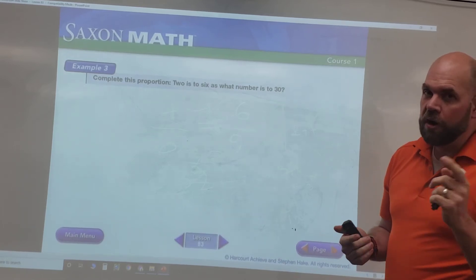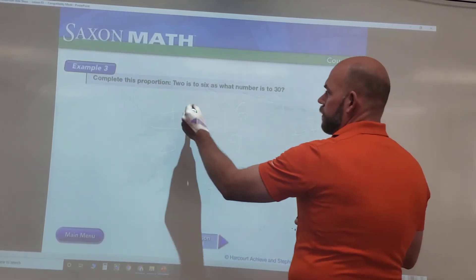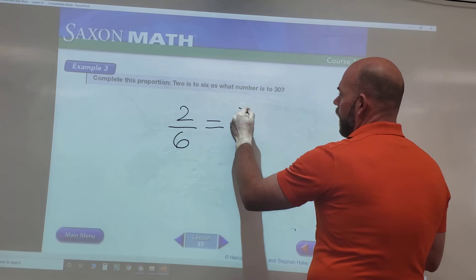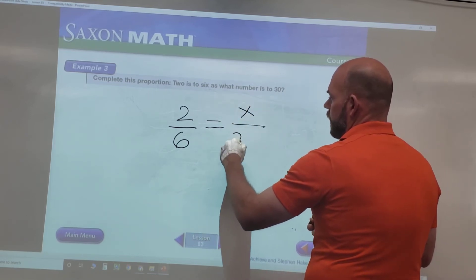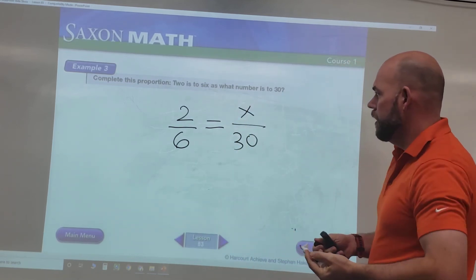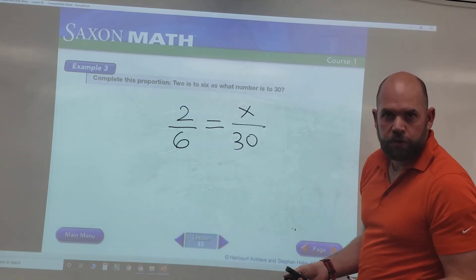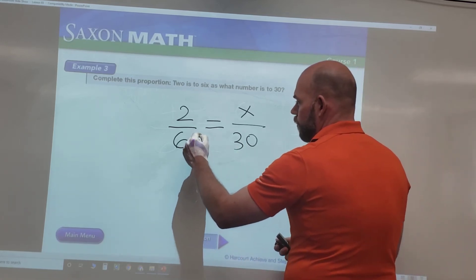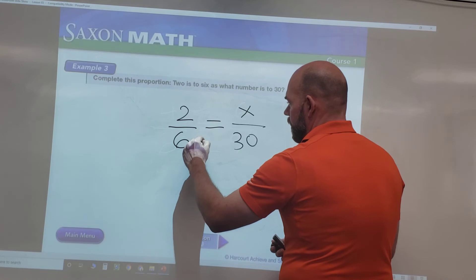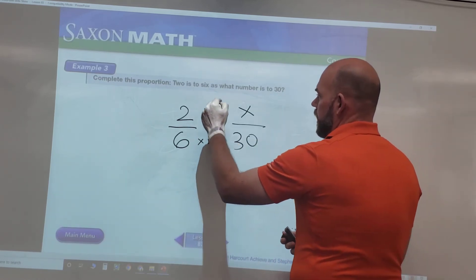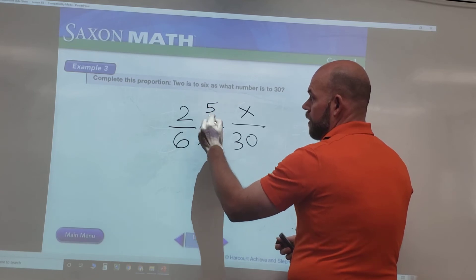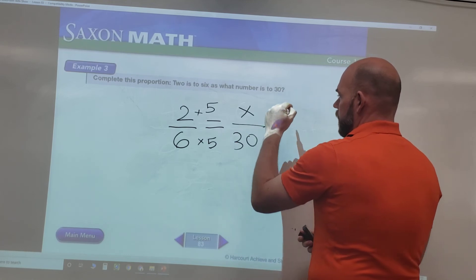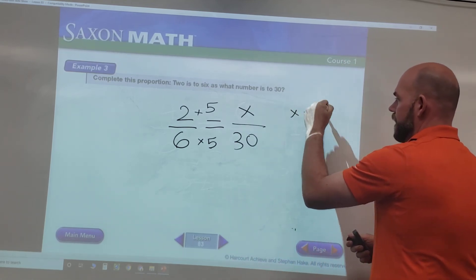So complete this proportion: two is to six as what number is to thirty. We'll start by writing it: two is to six as what number - I'm going to use X - is to thirty. Now we don't know what two goes into X, but we know six can go into thirty five times, so we can say six times five equals thirty. And if we put five on the bottom, we need to put it on the top.